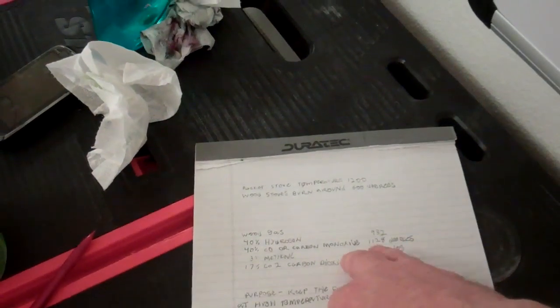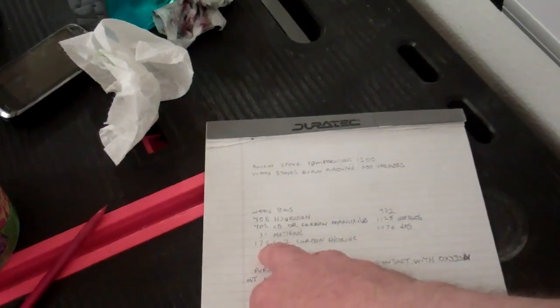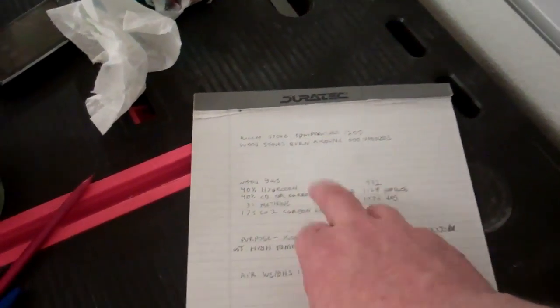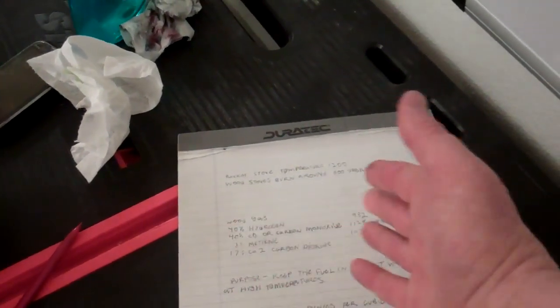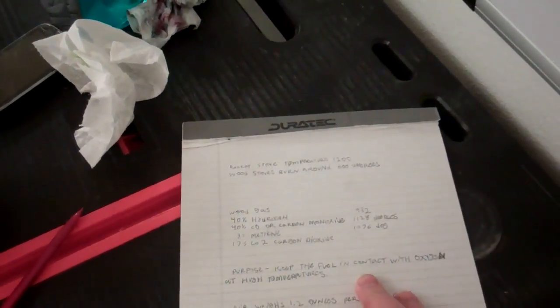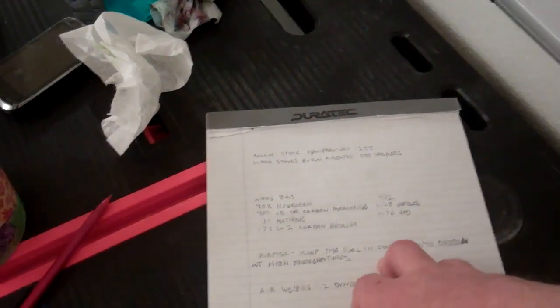Let's see, they emit 40% hydrogen, about 40% carbon monoxide which burns, then you get about 3% methane, 17% carbon dioxide. That's the gas that burns, but then of course you also have embers and carbon particulates that come up and they also burn if you can get the gas hot enough.